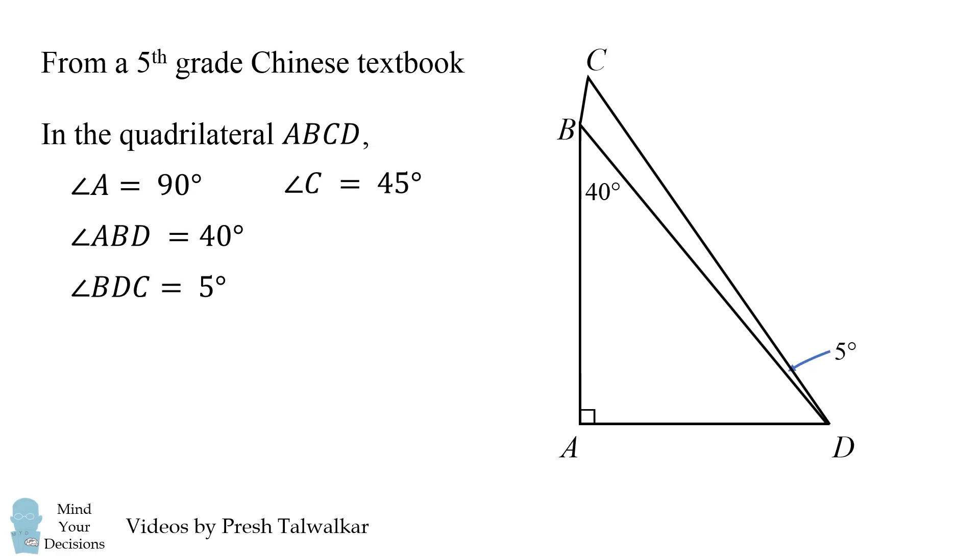Angle C is equal to 45 degrees and the length of AB is equal to 6. The puzzle is to find the area of quadrilateral ABCD.